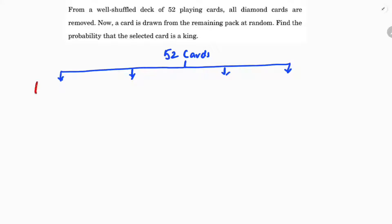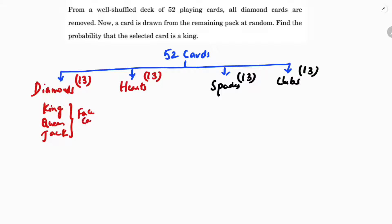Diamonds, hearts, spades, clubs. All are 13, 13 - all the cards are 13 diamonds, 13 hearts, 13 spades, 13 clubs. In that, every suit has king, queen, jack. These three are face cards or picture cards. Then ace and the number cards like 2, 3, 4, 5, 6, 7, 8, 9, 10.